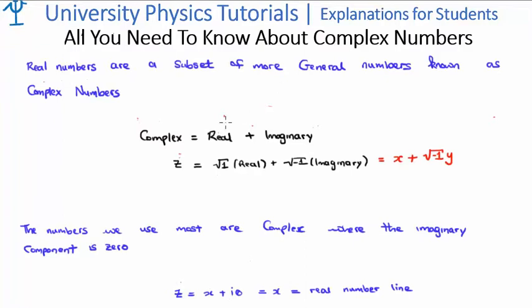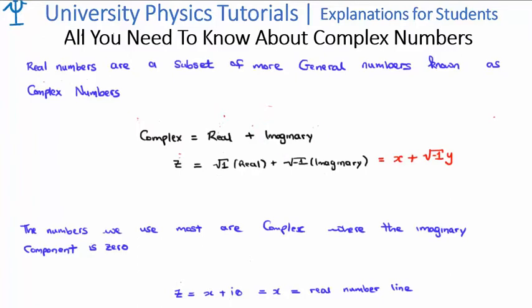So the square root of plus 1 is the building block for the real numbers, and the square root of negative 1 is the building block for the imaginary numbers. Once again the terminology 'real' and 'imaginary' isn't very good, but unfortunately we'll have to go with it because that's what it is.